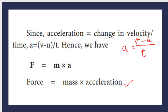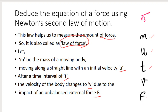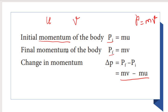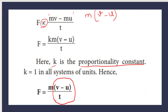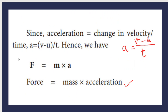Let us recap the derivation steps. First, define five quantities: mass, initial velocity, time, final velocity, and force. Second, write expressions for initial momentum, final momentum, and find the change in momentum. Third, substitute into the force expression: force is directly proportional to change in momentum divided by time, and introduce the proportionality constant. Fourth, set k equal to 1, substitute, and simplify (v minus u) by t as acceleration to get F equals ma.